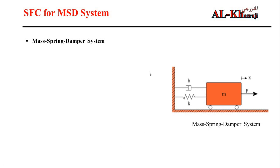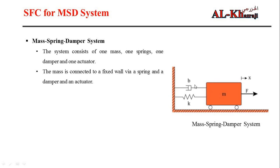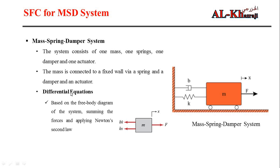Considering the following system: it consists of one mass, a spring, and a damper, with an actuator — a force — applied to the mass, forcing it to move in the positive direction. To derive the differential equation we use Newton's second law after drawing the free body diagram. Force in the positive direction minus the damper force minus the spring force equals m times x double-dot.